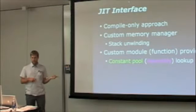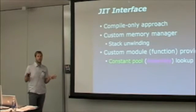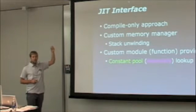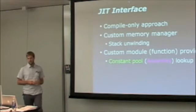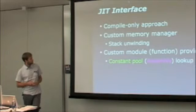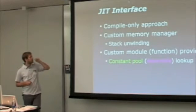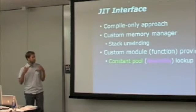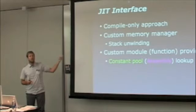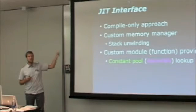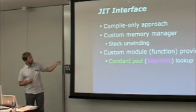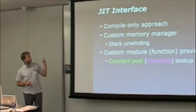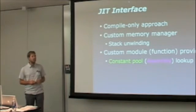The JIT interface between VMKit and LLVM — you can refer to Nate's talk from this morning — it's a compile-only approach. So you give a set of optimizations, you compile the method, and you get your native code. One thing that Nate didn't mention is that you can also specialize your memory manager, so when you're JITing you can allocate memory yourself. VMKit is doing this for stack unwinding, which is currently something that LLVM cannot do, so VMKit provides it. And finally, VMKit provides a custom module provider — that's the module provider Nate talked about — which will do constant pool lookup in the case of Java, or assembly lookup to find methods.